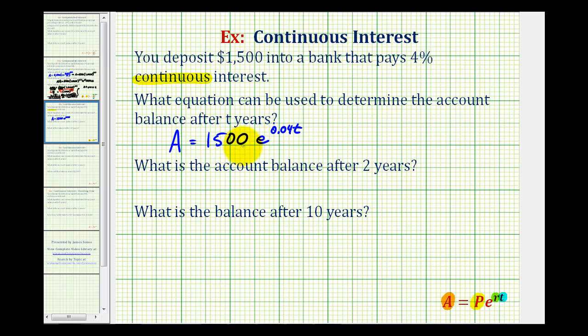So this would be the equation that would determine the account balance after T years. So if we want to know the account balance after two years, we can determine A of 2 or substitute 2 for T.